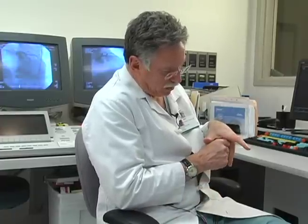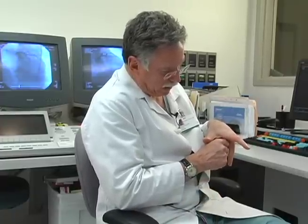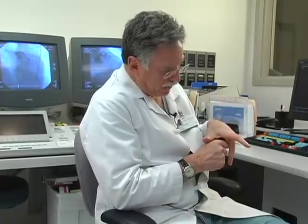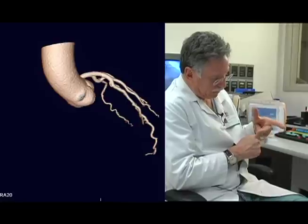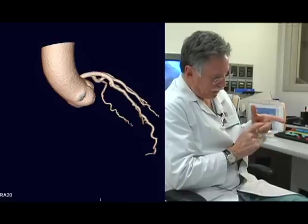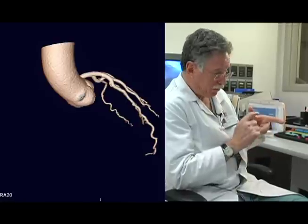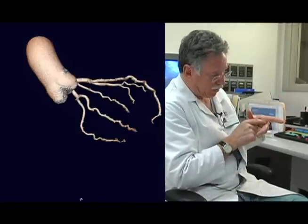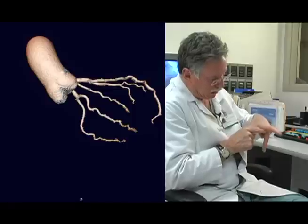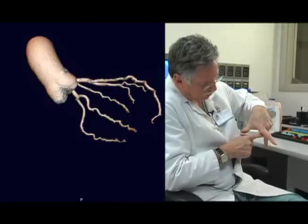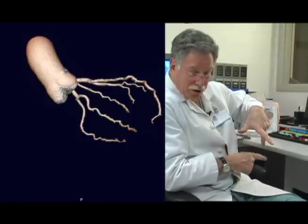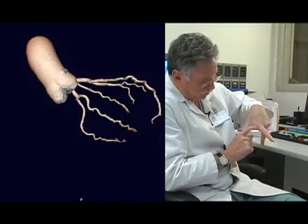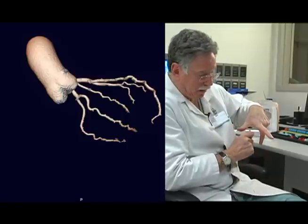And if we tip the heart cranial, then the circumflex comes upward and is foreshortened, but the diagonals pop upward. And if we go caudal, then the circumflex falls downward, and we can see the circumflex well, and the diagonals become hidden.